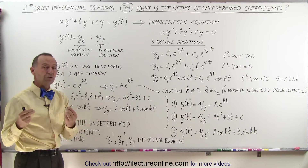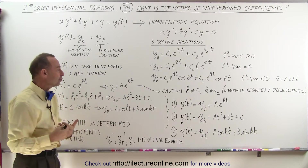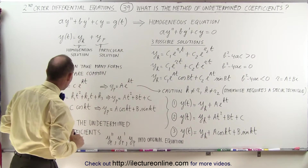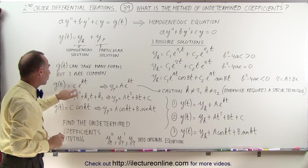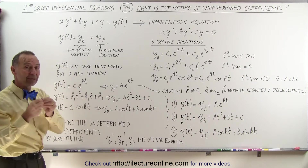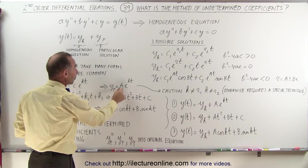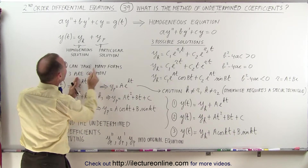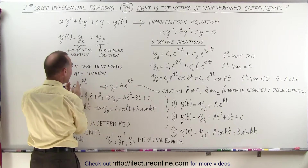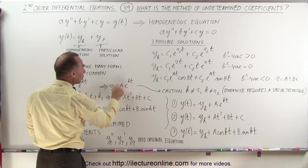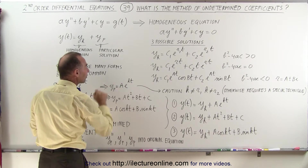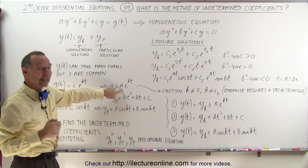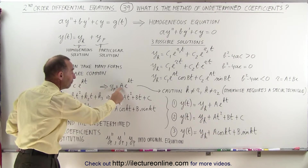Let's approach those three different kinds of very common forms. If it's an exponential function, we know that the particular solution is going to look like some constant times e to the kt, where e to the kt is the function given, and we need to determine the coefficient in front of that function. That's the undetermined coefficient — the job is to find what that value for A is.